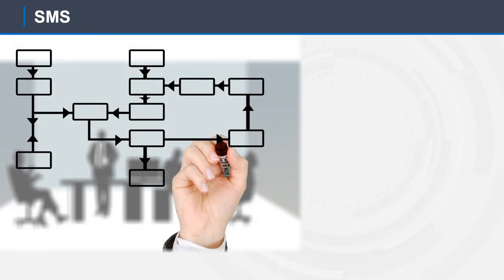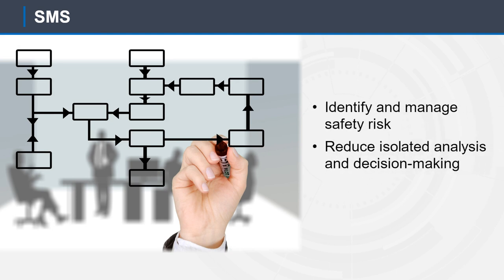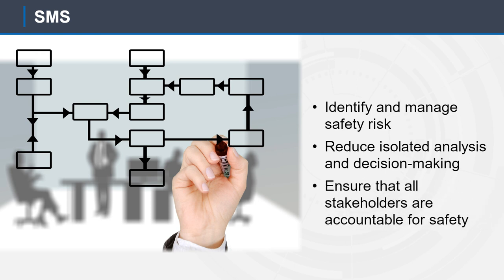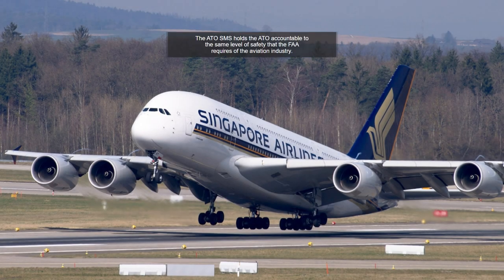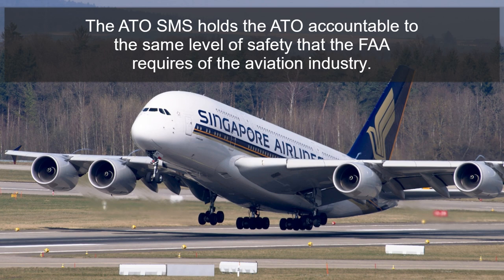The ATO-SMS provides a formalized, repeatable, and systematic process to identify and manage safety risk, reduce isolated analysis and decision making, and ensure that all stakeholders are accountable for safety. The ATO-SMS holds the ATO accountable to the same level of safety that the FAA requires of the aviation industry.